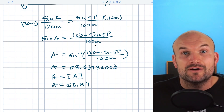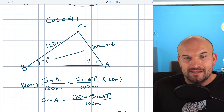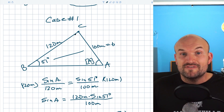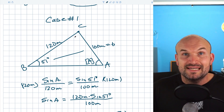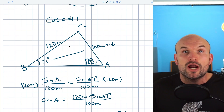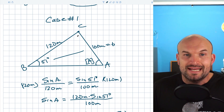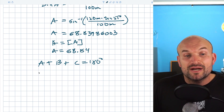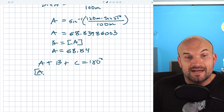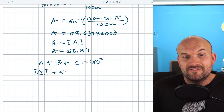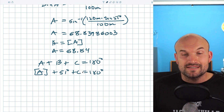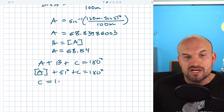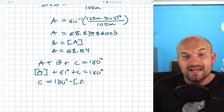Now let's find angle C. We figured out A — that's stored in the calculator. The important thing about finding C is that we already have two angles in the triangle, and all angles in a triangle add up to 180 degrees. So I can say B plus A plus C equals 180. We already have A stored and B is 51 degrees, so I can solve for C: C equals 180 degrees minus stored A minus 51 degrees.